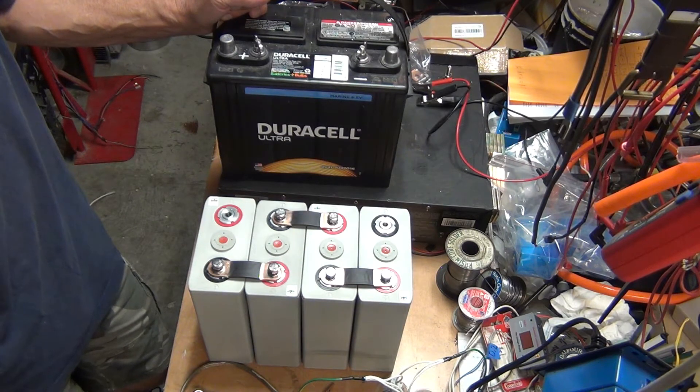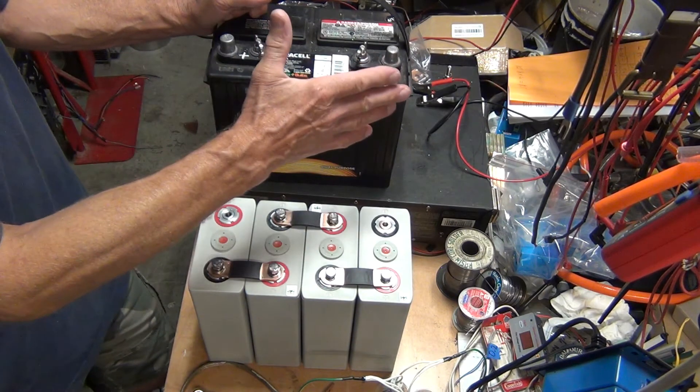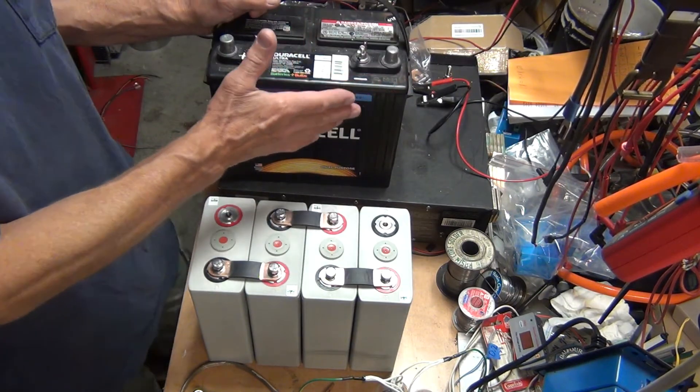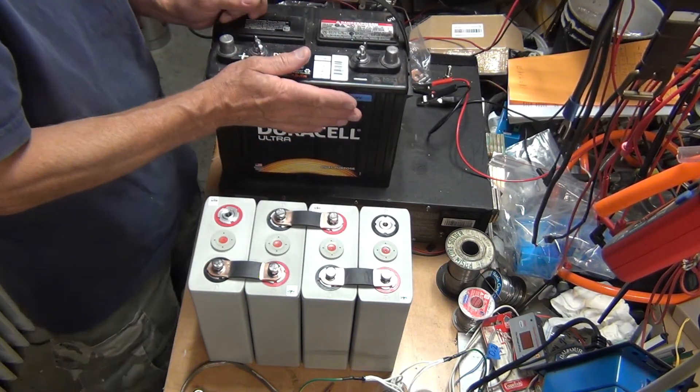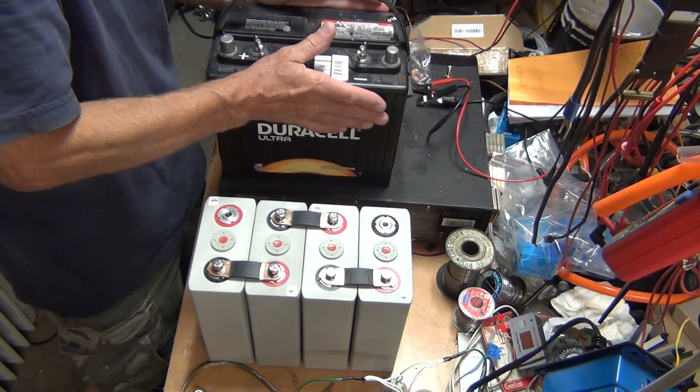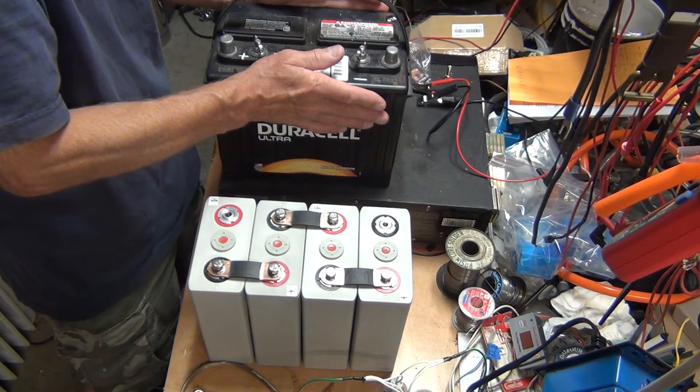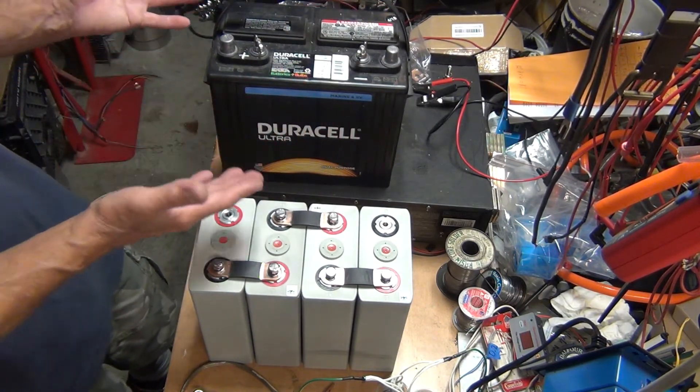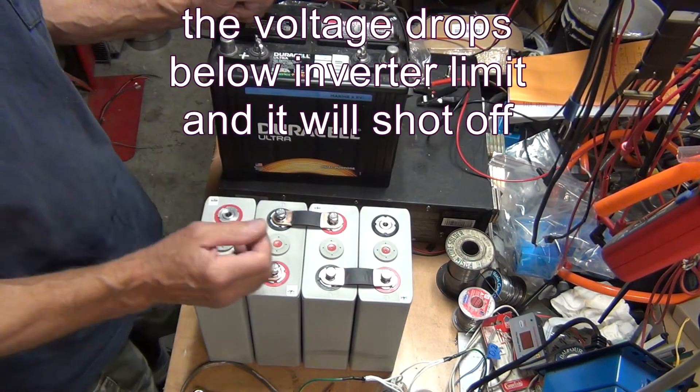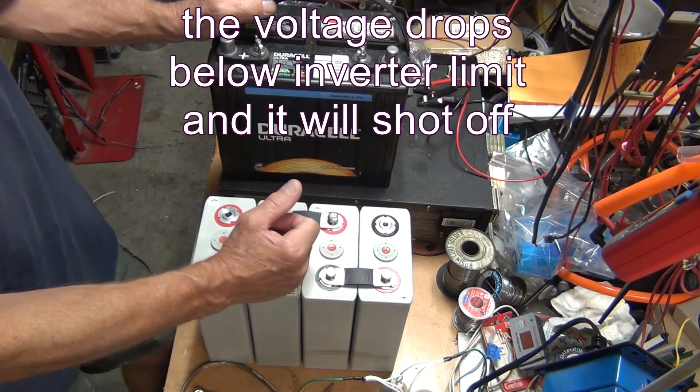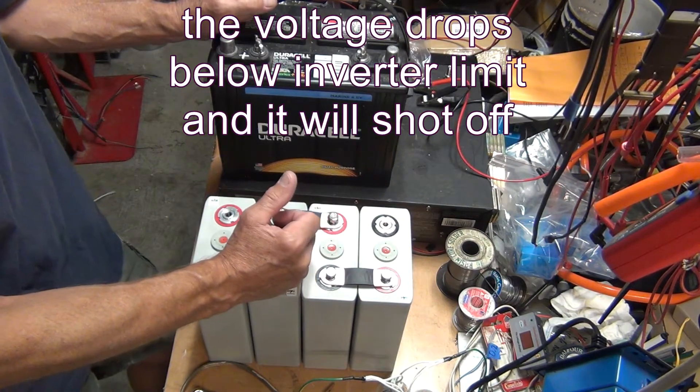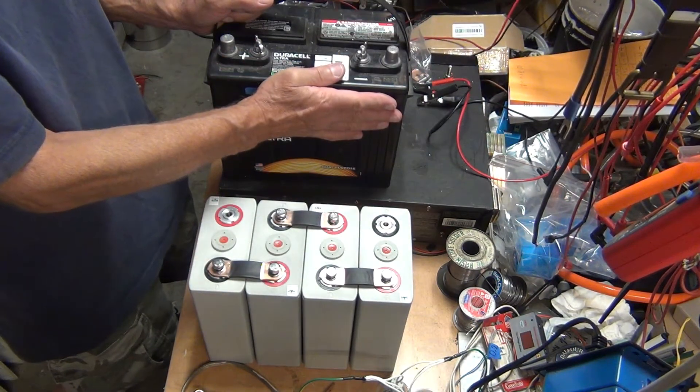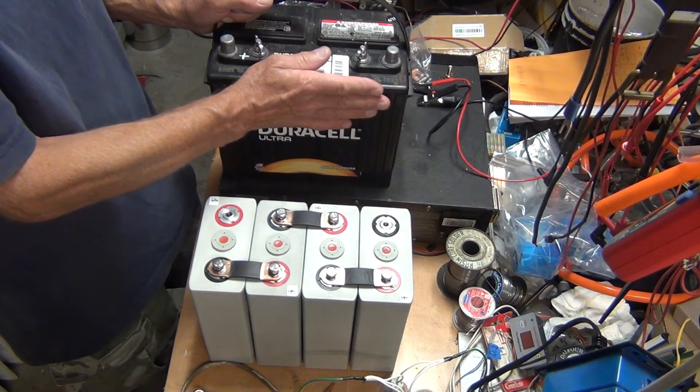No matter what I did with those four 100, I could not get even half of it out of it. If you get 50 amp hours out of 100, you're lucky. Because the voltage, when you start drawing the amps out, the voltage just dips below usable limit pretty much. And this one, there is just no comparison.